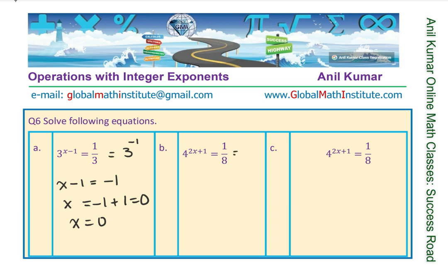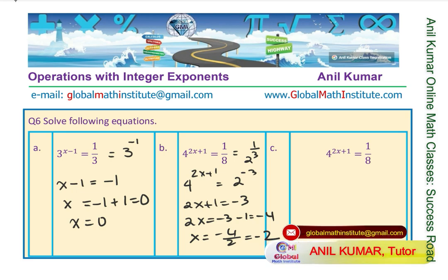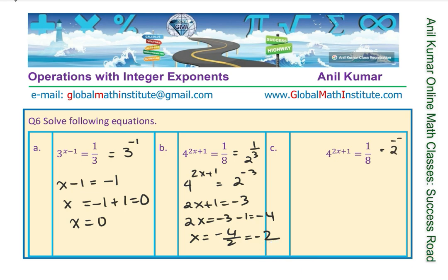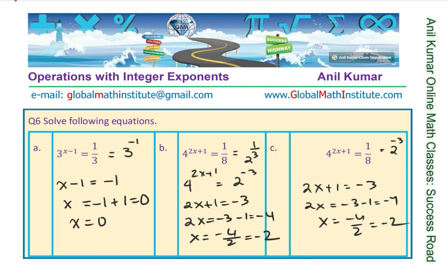Let's take up the next one. You can write 8 as 2 cubed. So we have 4 to the power of 2x plus 1 equals 2 to the power of minus 3. That means 2x plus 1 equals minus 3, so 2x equals minus 3 minus 1, which is minus 4, and x equals minus 4 over 2, which is minus 2. The next one is 4 to the power of 2x plus 1 equals 1 over 8. Since 1 over 8 means 2 to the power of minus 3, we get 2x plus 1 equals minus 3, giving x equals minus 2.